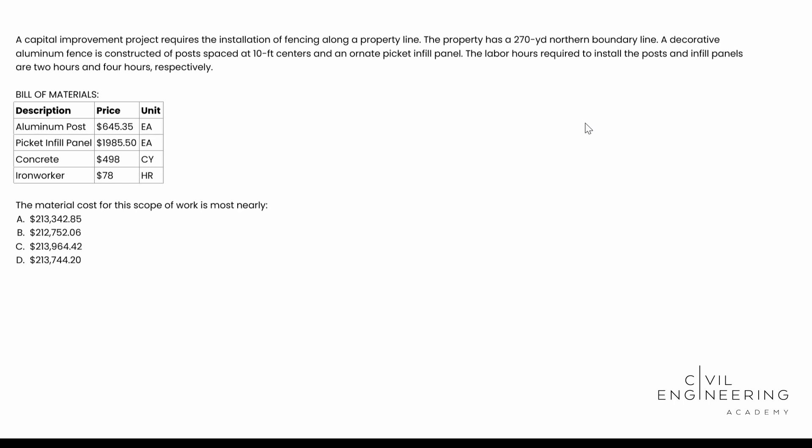So today we have a construction management problem. It says a capital improvement project requires the installation of fencing along a property line. The property has a 270 yard Northern boundary line. A decorative aluminum fence is constructed of posts spaced at 10 foot centers and an ornate picket infill panel. The labor hours required to install the posts and infill panels are two hours and four hours respectively.